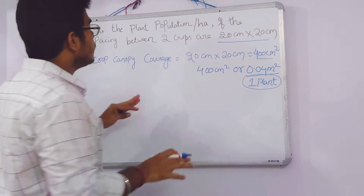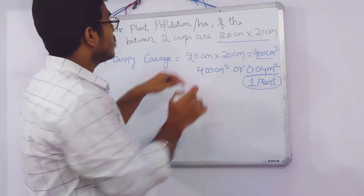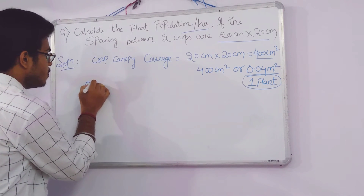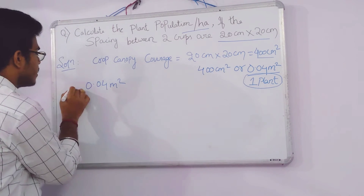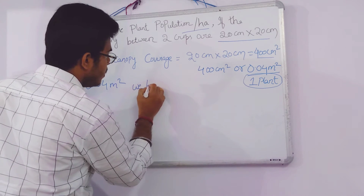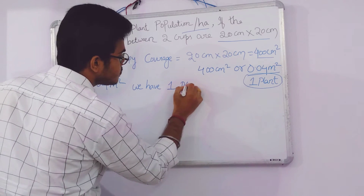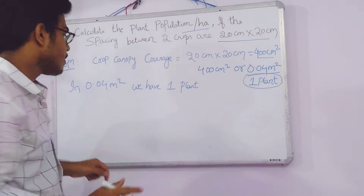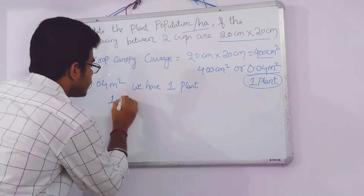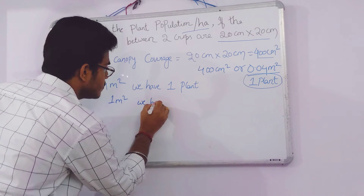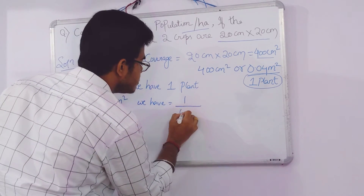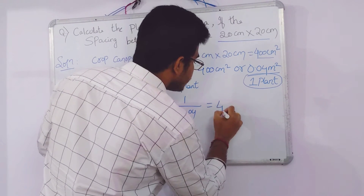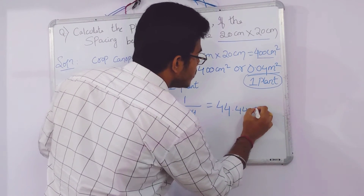But we need to calculate it for 10,000 meters square — one hectare of area. In 0.04 meters square we have one plant. So now we have to calculate this for one meter square. In one meter square we will have 1 divided by 0.04, which gives us 44.44.